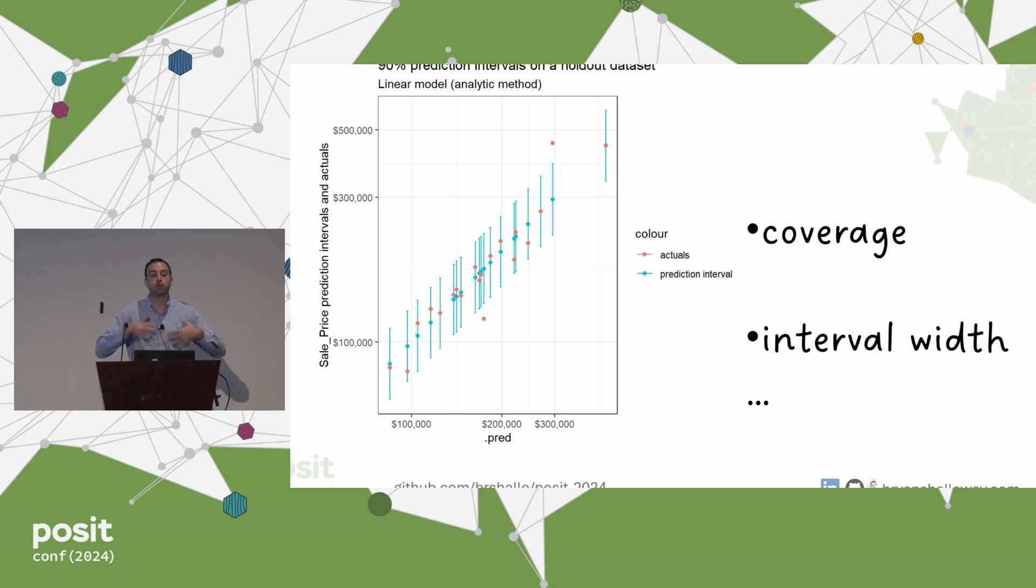This is the baseline measure that we want to use to see if our coverage rate is actually what we're expecting it to be. But we don't just care about coverage, we also care about the interval width. Because if we have more narrow intervals, that means our model is generally doing a better job fitting the data. And having less uncertainty in your predictions is going to be more useful for whatever stakeholders you're sharing them with. So we have this dual goal of meeting our coverage requirements while also having as narrow intervals as possible.